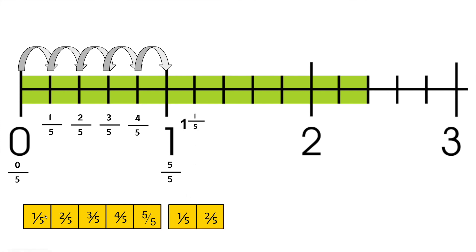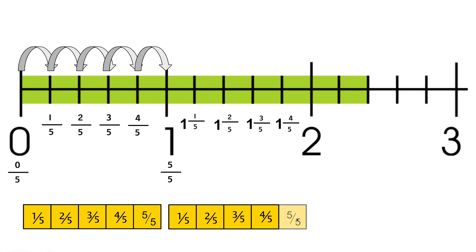Adding another fifth: we have 1 whole and 2/5. Continuing, we have 1 and 3/5, then 1 and 4/5. Adding another fifth gives us 1 and 5/5, which is the same as 2 wholes. We must start over because we've reached a whole number. From 2 to 3, there are still 5 equal parts, so the denominator continues to be 5. Adding a fifth: we have 2 wholes and 1/5, then 2 and 2/5. If you kept going, you would get to 2 and 5/5, which is the same as 3 wholes.